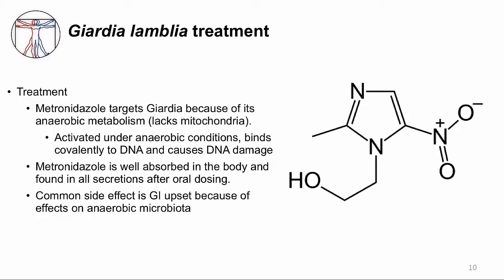This is an infection you want to treat. Interestingly, the main drug is an antibiotic called metronidazole, usually used for treating anaerobic bacteria. So why is a protozoa susceptible to an antibacterial drug? It's because Giardia and its cousin Trichomonas evolved during a period where mitochondria were not incorporated into eukaryotes, or they lost their mitochondria — so Giardia has no mitochondria and thus has anaerobic metabolism. Metronidazole is activated under anaerobic conditions, which is why Giardia is susceptible to it. Its mechanism of action is DNA damage. It's well absorbed after oral dosing, and a common side effect is gastrointestinal upset because the antibiotic kills many of the anaerobic microbiota in the intestinal tract.